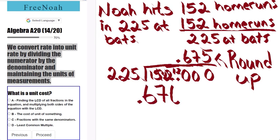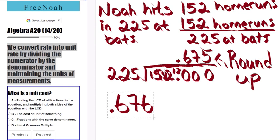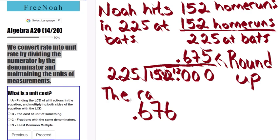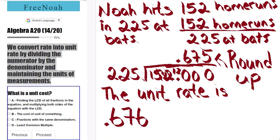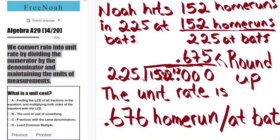The unit rate here is 0.676 home run per at bat. It's batting average. The unit rate is 0.676 home run per at bat.